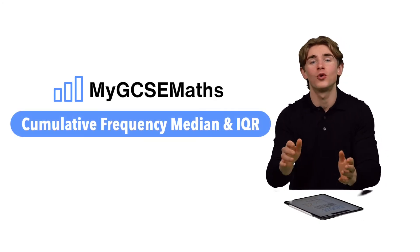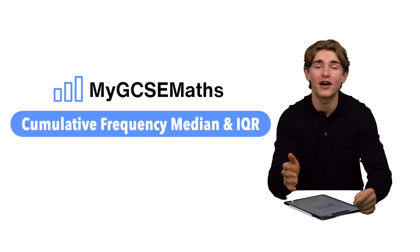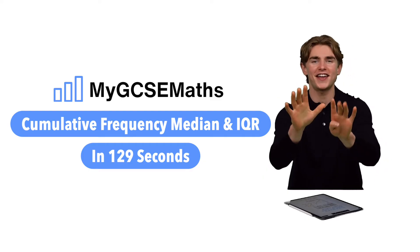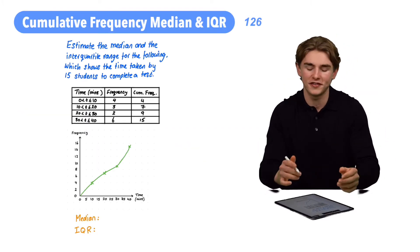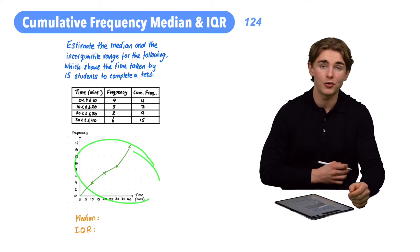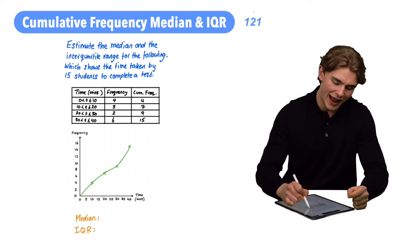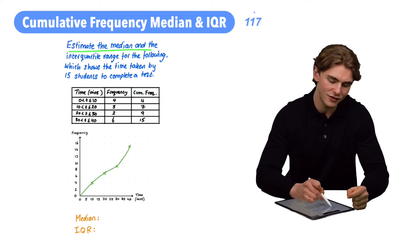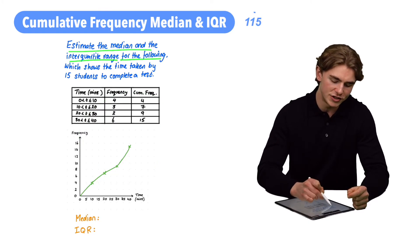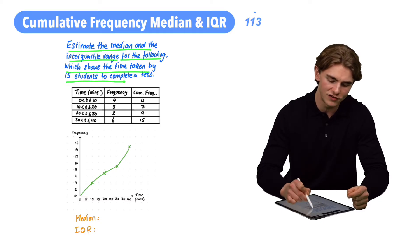How to find the median and interquartile range from a cumulative frequency graph in 129 seconds. Let's go. Questions like this which involve finding the median and interquartile range from a cumulative frequency graph come up all the time. Let's have a look at this one and see how it's done. The question says estimate the median and the interquartile range for the following which shows the time taken by 15 students to complete the test.